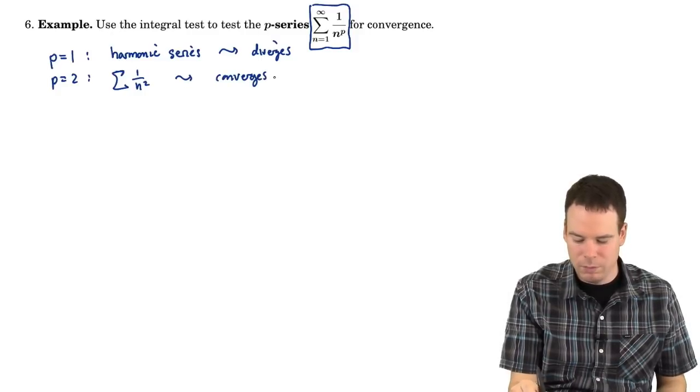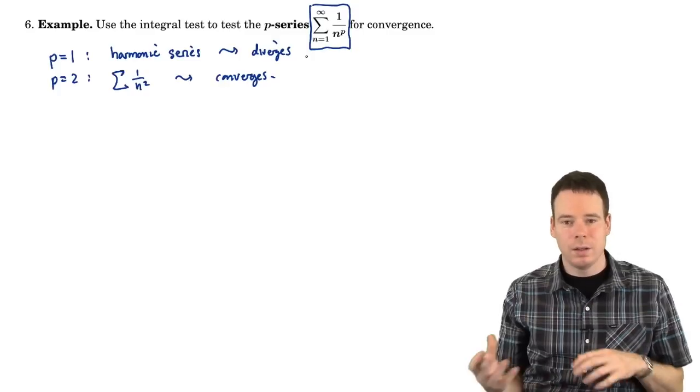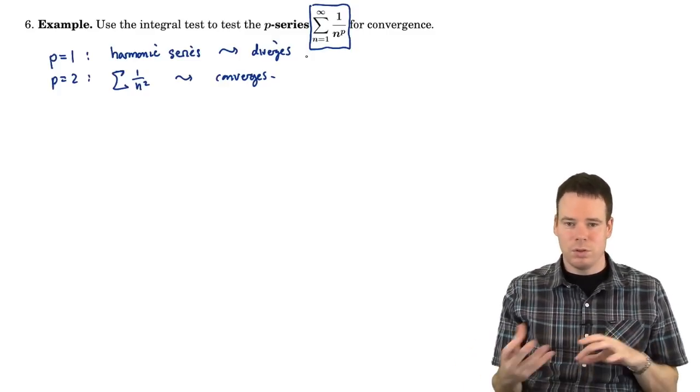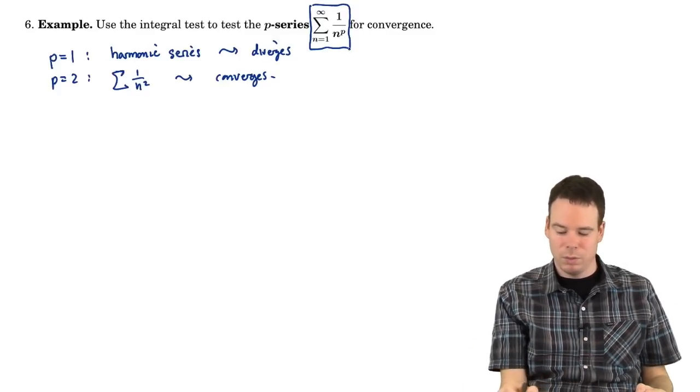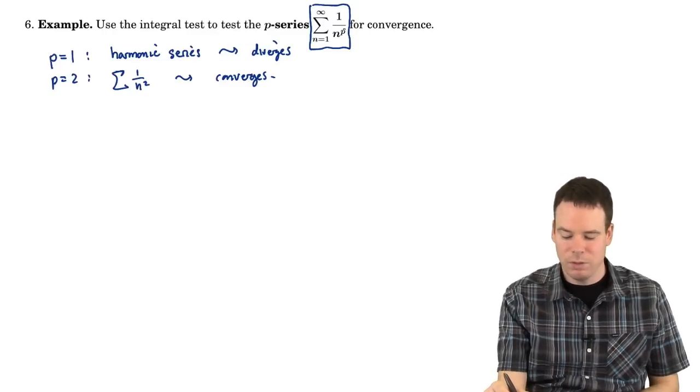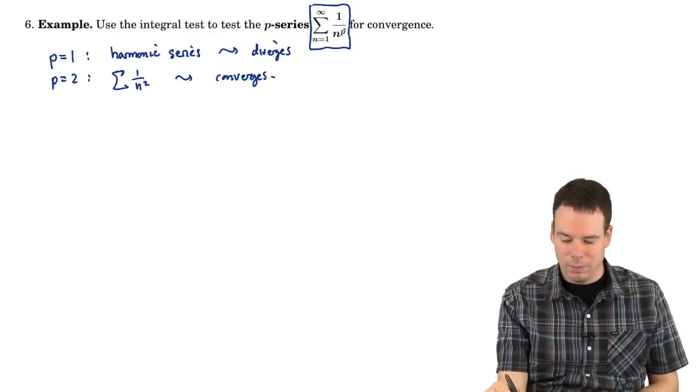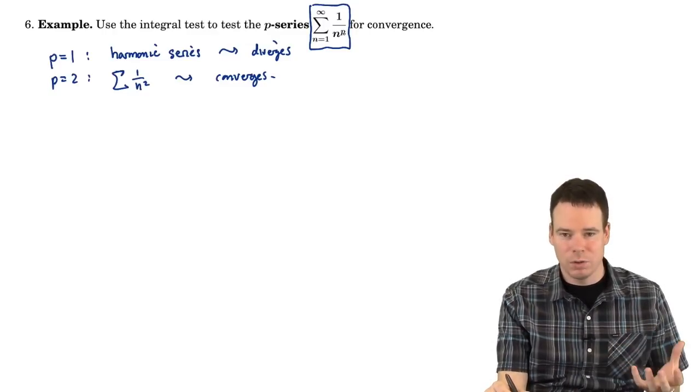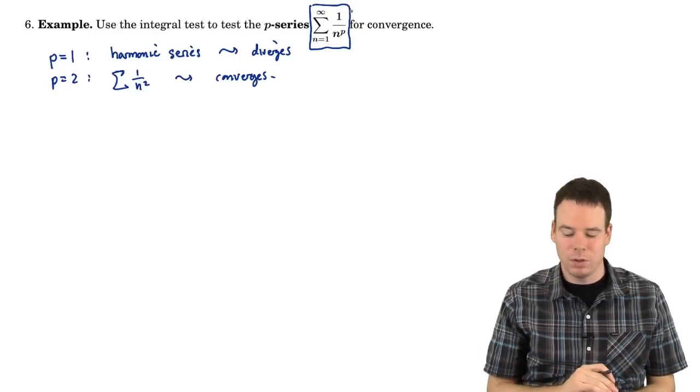So we already know that for different values of p, the question of convergence or divergence can change. When p equals 1 it's divergent, when p equals 2 it's convergent. This is saying try to figure out what values of p have to be for which it converges and then of course those for which it diverges.